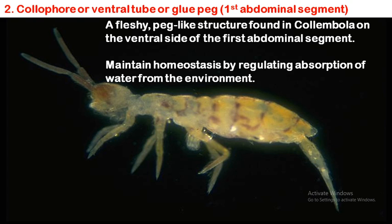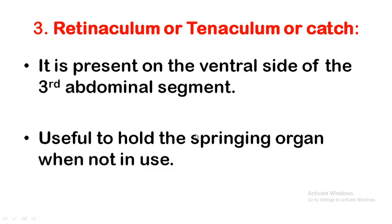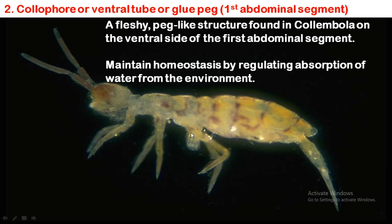Next is the colophore, or ventral tube, or glue peg. This is present on the first abdominal segment, just behind the three pairs of legs. It is a fleshy peg-like structure found in Collembola on the ventral side of the first abdominal segment. Its function is to maintain homeostasis by regulating absorption of water from the environment.